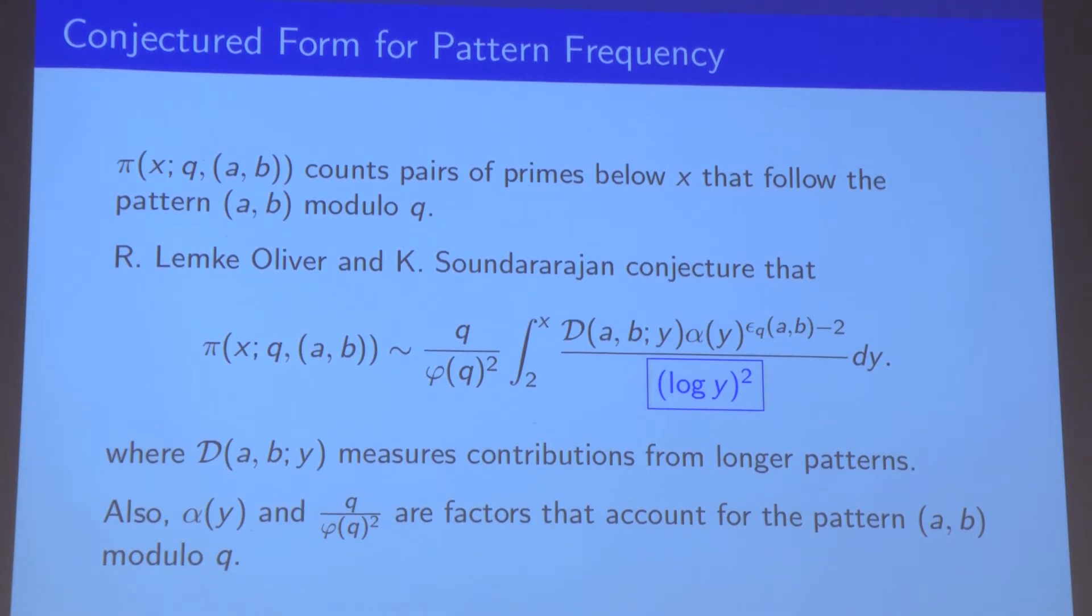The boxed and highlighted part is the part of the conjecture that is similar to the prime number theorem. There's a 1 over log y squared, and the squared term comes from the fact that we're looking at pairs of primes and not just single primes. And then let's look at the terms in the numerator. These are just correction factors to the prime number theorem that were part of the conjecture.